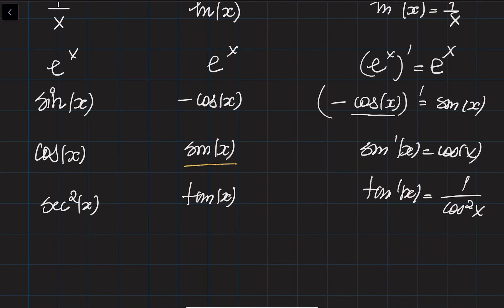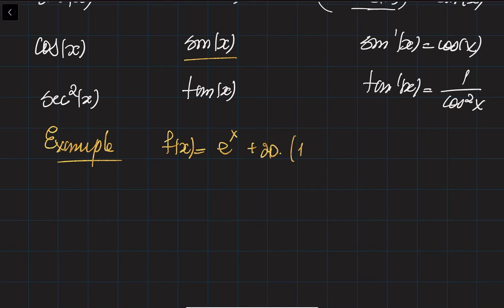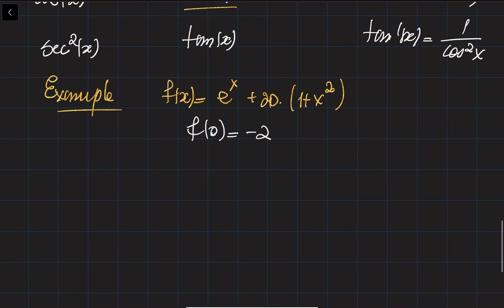Let's do an example. Suppose f of x equals e to the power of x plus 20 times (1 plus x squared), and we need to find its antiderivative. It is also given that capital F of 0 equals minus 2. You will understand why we need this initial condition in a moment.